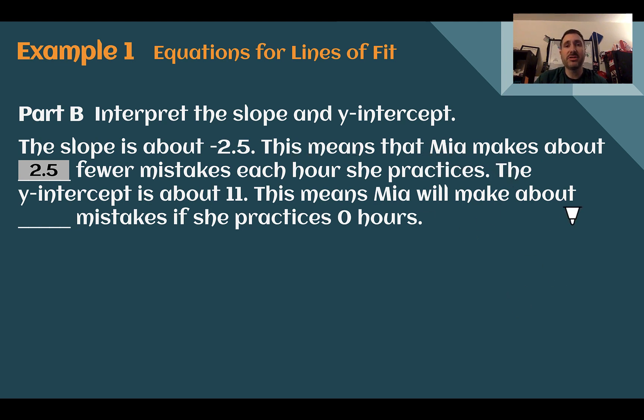For the y-intercept, that's where she starts at. So she's starting at about 11 mistakes, assuming she practices for zero hours. So for your y-intercept interpretations, again, either where they're starting, or if you have zero of your x value, what is going to be the y value. In this case, it's that second one. No hours for x means 11 mistakes for y.